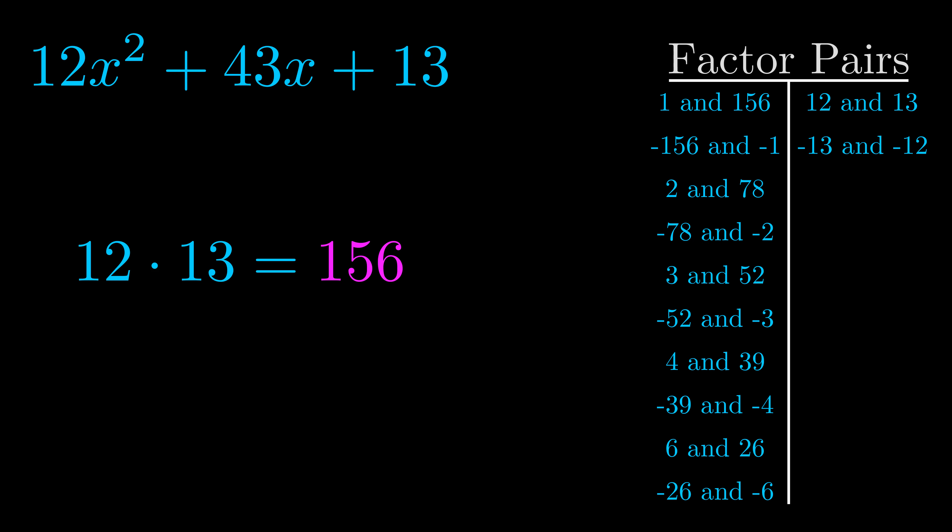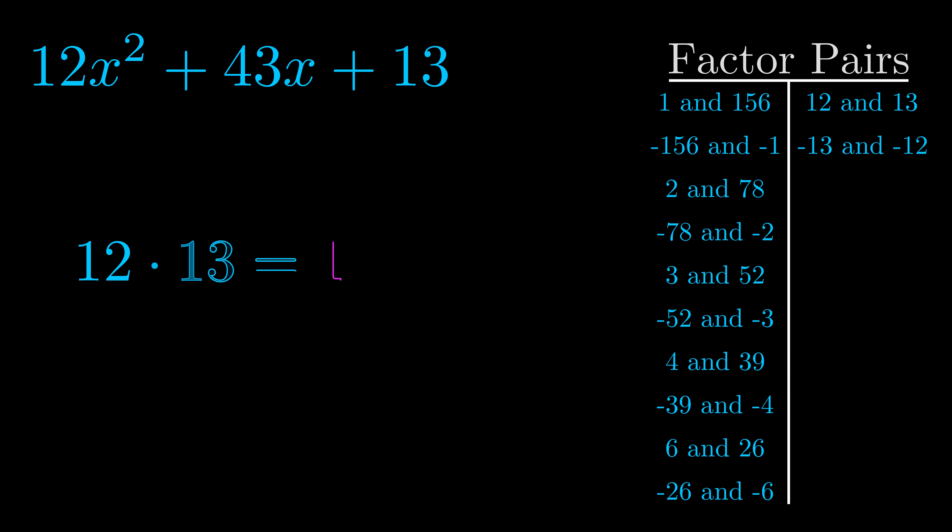Now once you have these factor pairs, the goal is to find which of these pairs adds to the b value. The b value is the coefficient on the x term. That's the middle term, the one that we haven't done anything with yet. And really this is the only factor pair that we need.